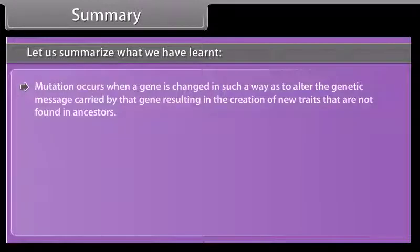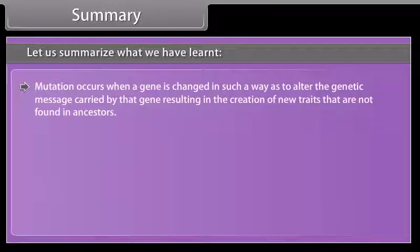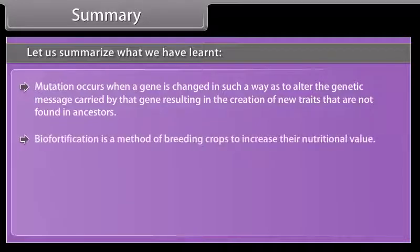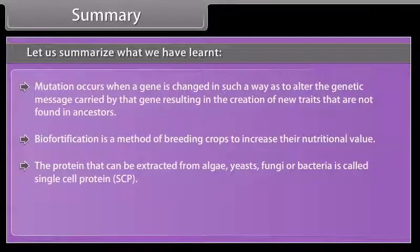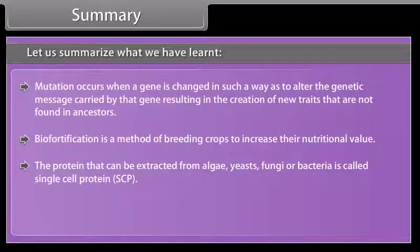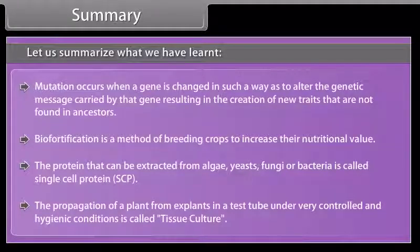Mutation occurs when a gene is changed in such a way as to alter the genetic message carried by that gene, resulting in the creation of new traits not found in ancestors. Biofortification is a method of breeding crops to increase their nutritional value. The protein that can be extracted from algae, yeasts, fungi, or bacteria is called single cell protein (SCP). The propagation of a plant from explants in a test tube under very controlled and hygienic conditions is called tissue culture.